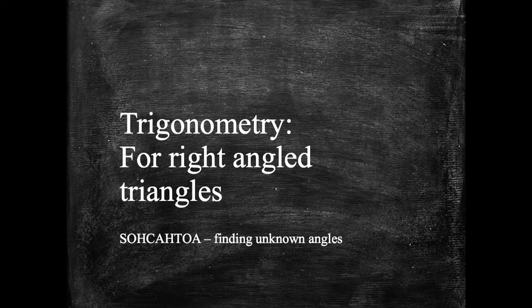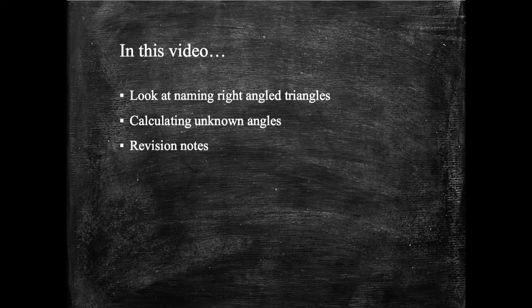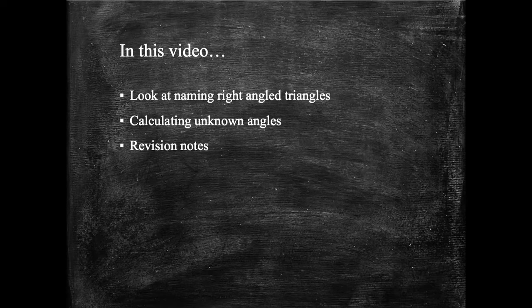Hi, in this video we're going to look at using trigonometry for finding an unknown angle in a right-angled triangle. I'll show you how to name right-angled triangles quite quickly. There is another video that explains how to do this when working out trigonometry for missing sides, but nevertheless I'll do a quick recap. You'll have the opportunity to practice a couple by yourself and there's some revision notes at the end.